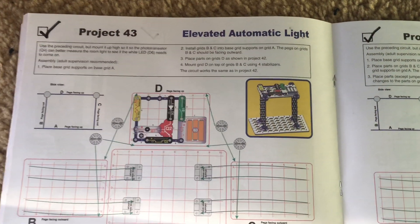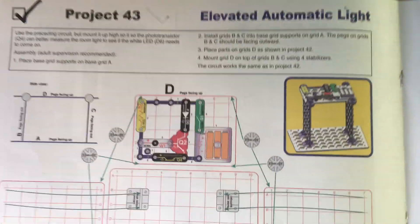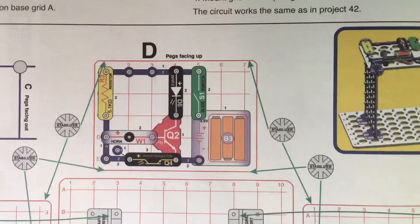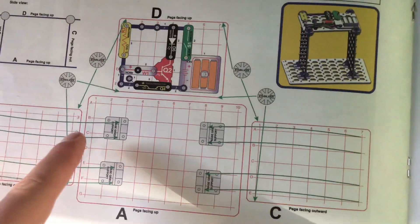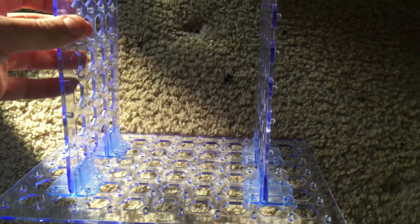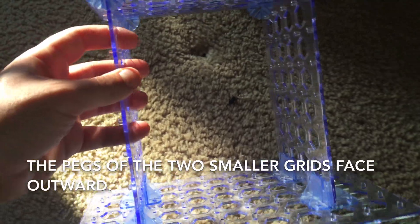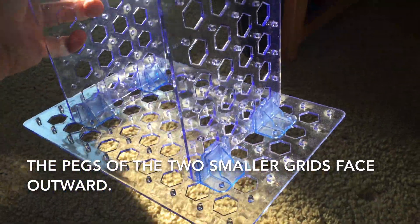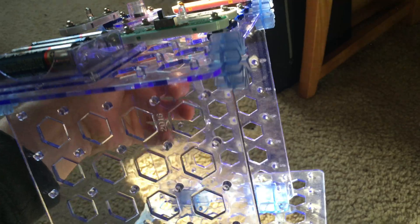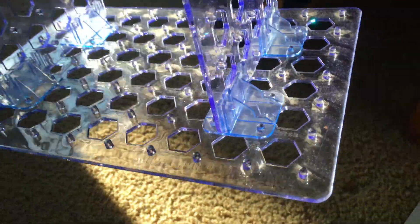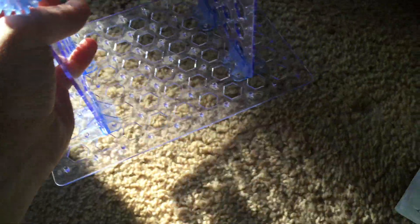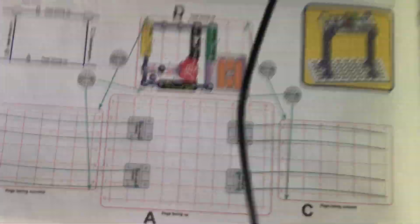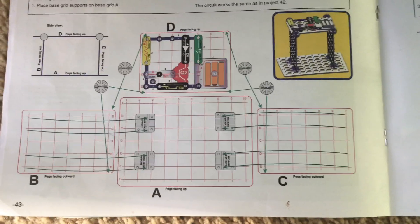Project 43. We'll use the same circuit as in the previous project, but we will mount it on two of the small base grids, which are mounted in a vertical position onto the larger base grid. We will use holders to mount the grids onto the big one, and here's the diagram to do that.